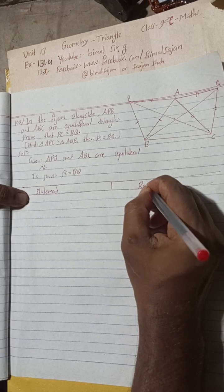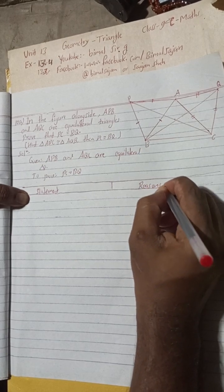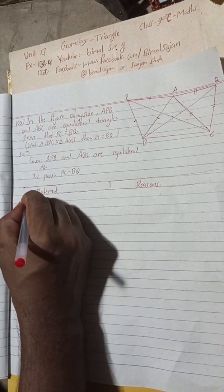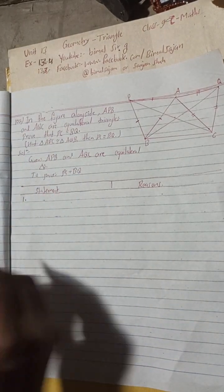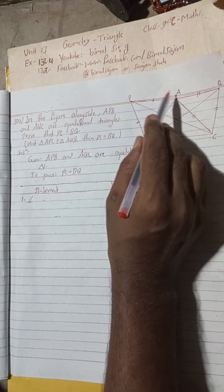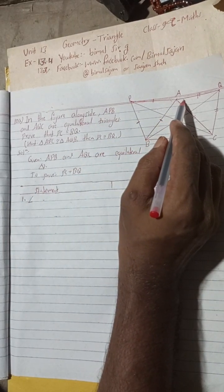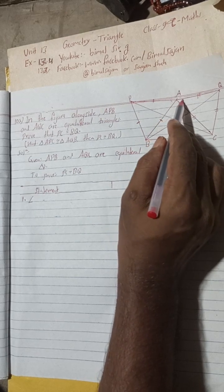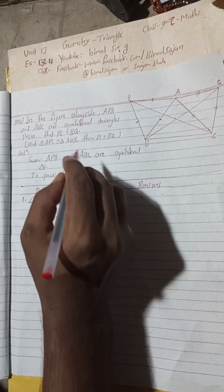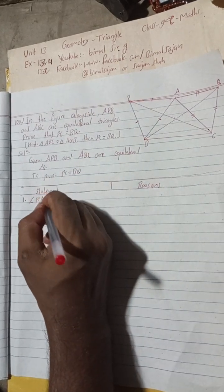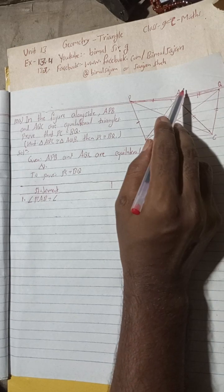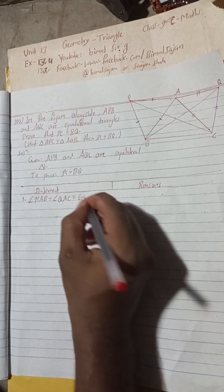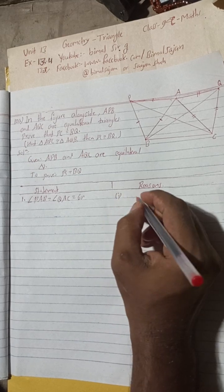Now here are statements and reasons. Number one: You can show that angle PAB is equal to angle QAC, both angles are 60 degrees. This is an equilateral triangle, so all angles are 60 degrees. I'll write here: angles of equilateral triangles are equal.